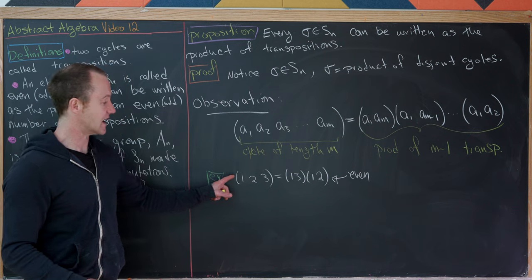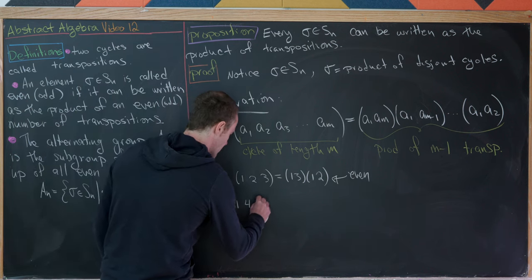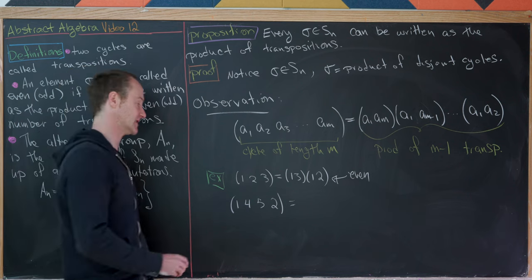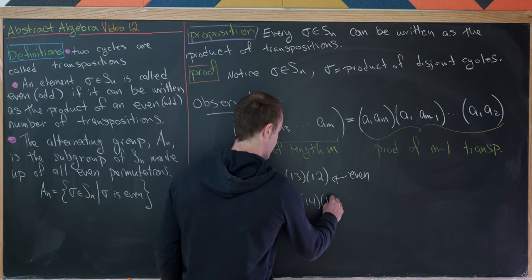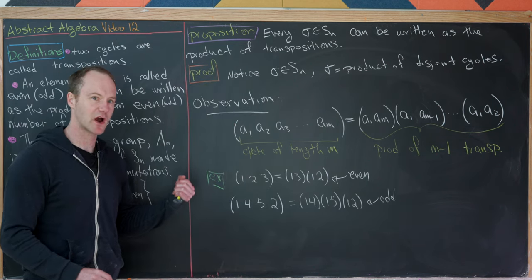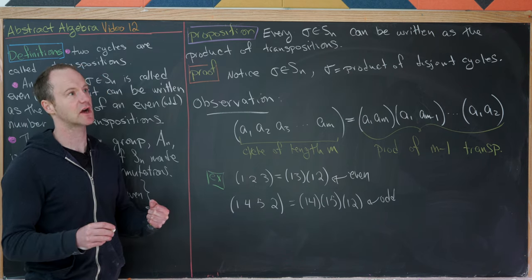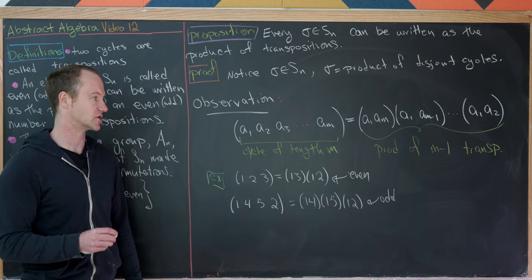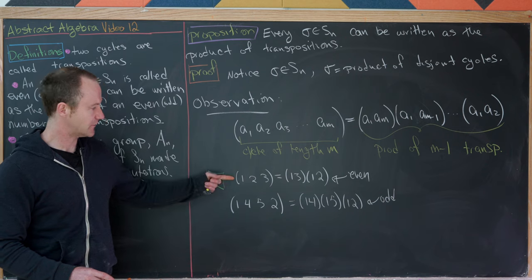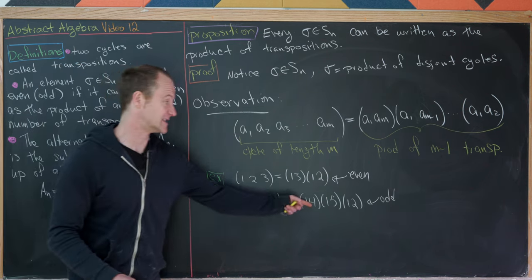Whereas the 4-cycle (1,4,5,2) is an odd element of S5, because we can write it as (1,4)(1,5)(1,2) — an odd number of transpositions. When talking about even and odd elements of Sn, you're not talking about the length of the cycle but the number of transpositions required. Cycles of odd length are even permutations; cycles of even length are odd permutations — opposite parities.